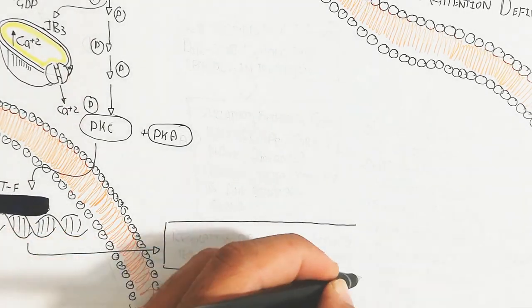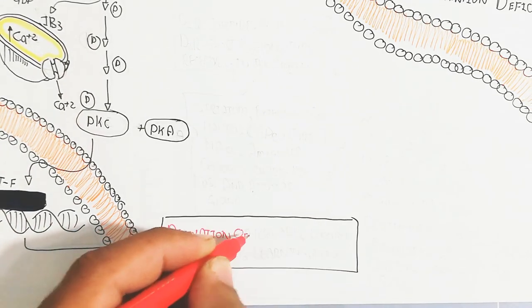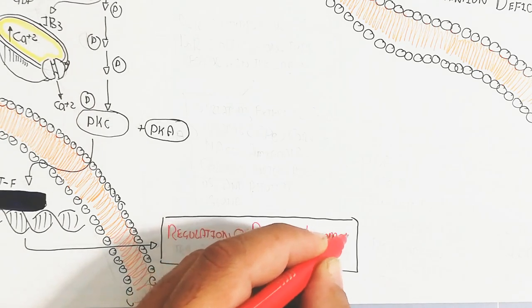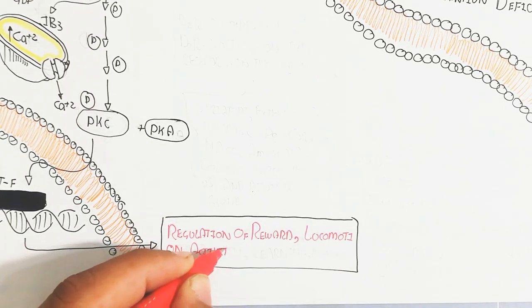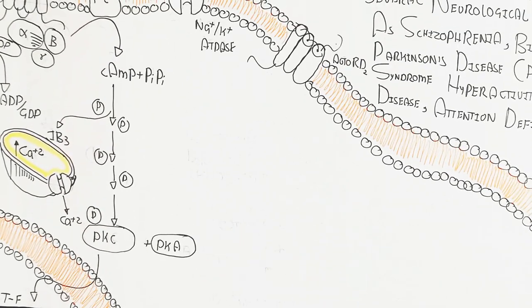These regulate locomotion, activity, learning, and memory. For example, LTP long-term potentiation, long-term memory as well as short-term memory, and synaptogenesis.